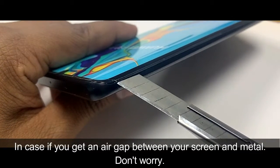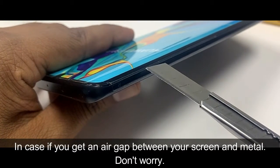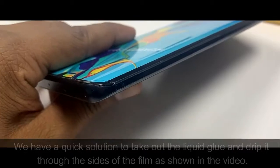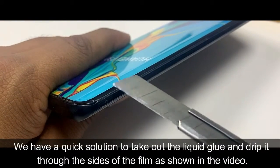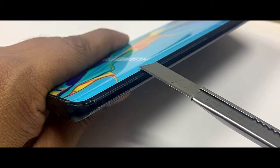In case you get an air gap between your screen and metal, don't worry. We have a quick solution: take out the liquid glue and drip it through the sides of the film as shown in the video.